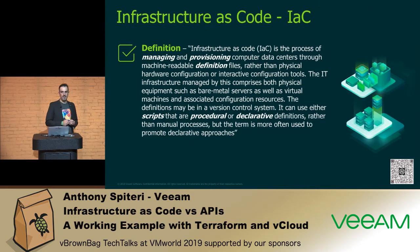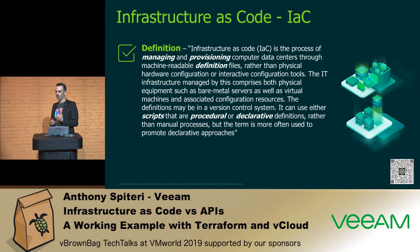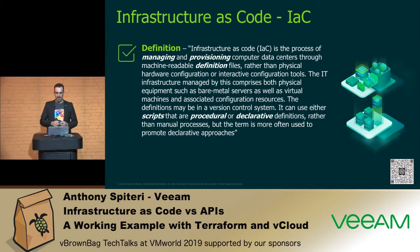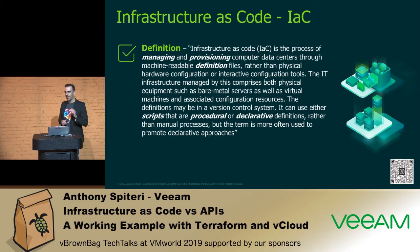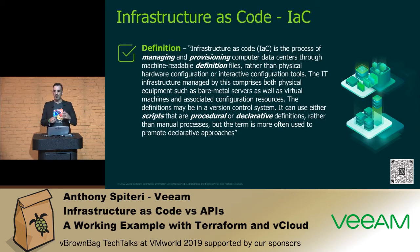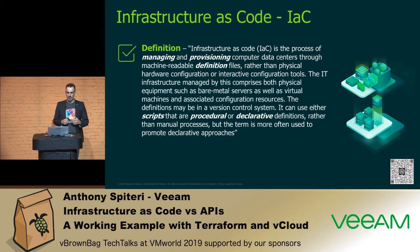Infrastructure as code is different. This is a long definition, but I think it's important for those guys looking for infrastructure as code to understand exactly what we're talking about compared to APIs. Infrastructure as code, or IaC, is a process of managing and provisioning computer data centers or infrastructure through machine-readable definition files. So we're not using physical tools, we're not using manual tools — we're using these pre-defined files.